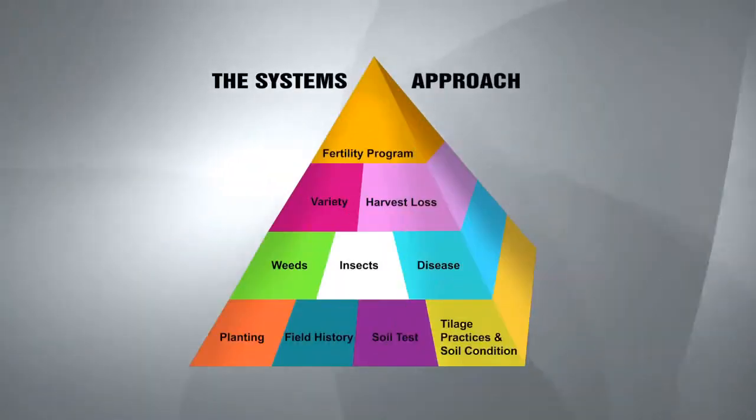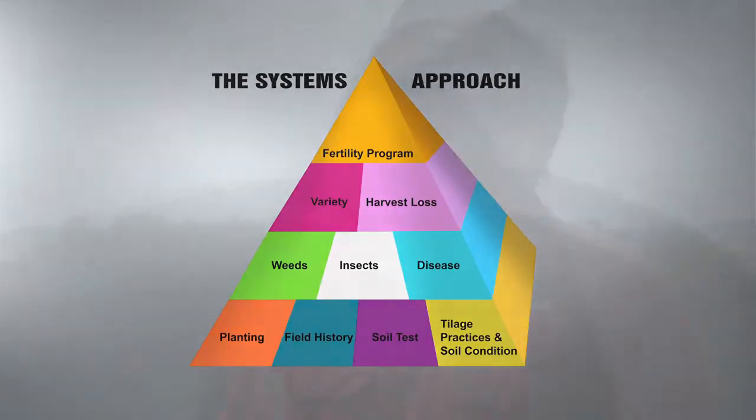Ken, we've talked about it before, but let's start at the beginning with a program you like to call the systems approach. Yeah, it's easy to say and easy to talk about, but actually pretty complicated to implement. It's a series of things that continue to build on themselves. Our starting block is going to be the basic soil fertility — we can't change the soil type or texture, but we're going to look at what we have to start with from pH to P and K.